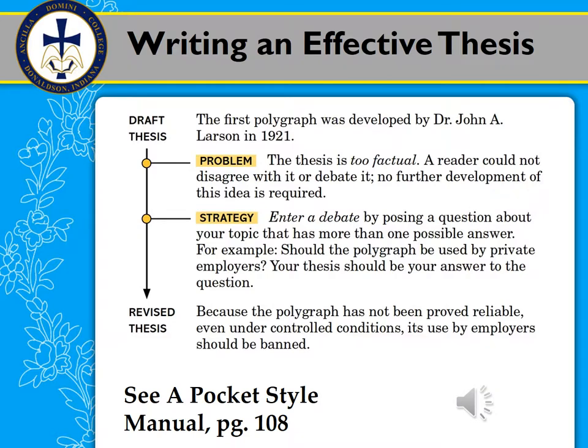Let's look at an example of writing an effective thesis. The draft thesis says: the first polygraph was developed by Dr. John A. Larson in 1921. The problem with this is that the thesis is too much of a fact — you're not really making a claim. In order to make a claim, people have to be able to argue with it. You've put a fact out there that nobody can really contest, so it doesn't have any chance to be developed or supported throughout the paper.